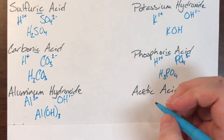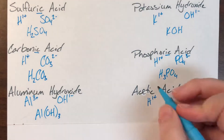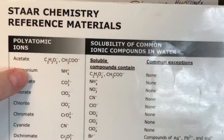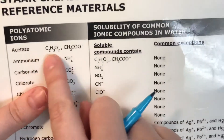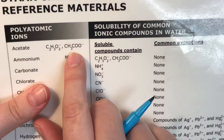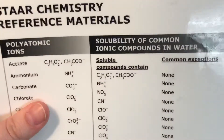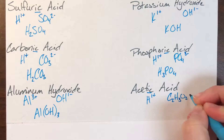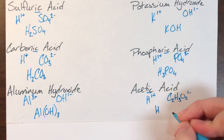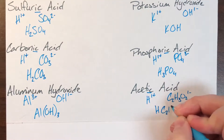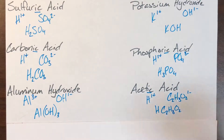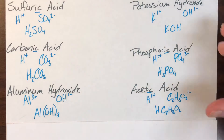Next is acetic acid. 'Acid' means I'm starting with H. 'Acetic' — the '-ic' ending means it's the '-ate' form — so I'm looking for acetate. Acetate has two different formula forms you can write; I prefer C₂H₃O₂⁻. Writing them together: acetate's one becomes hydrogen's one — don't write ones — and hydrogen's one becomes acetate's one — don't write ones. So HC₂H₃O₂ is acetic acid.